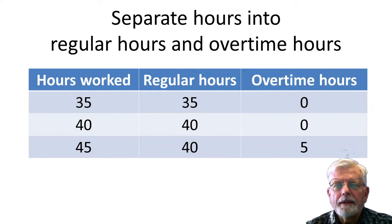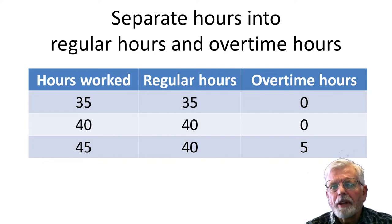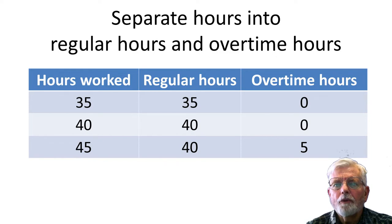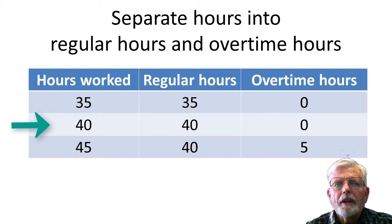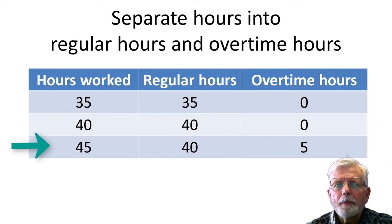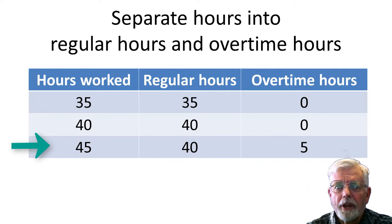Overtime gets paid at time and a half. Since there is a different pay rate for regular hours and overtime hours, it is necessary to separate the number of hours worked into regHours and overtimeHours. Here are three examples including overtime for anything over 40 hours. If people work 35 hours, there is no overtime. If people work 40 hours, still there is no overtime. However, if people work 45 hours, then the pay is computed at the pay rate for the first 40 hours, but the program needs to make a separate computation for the 5 hours of overtime.